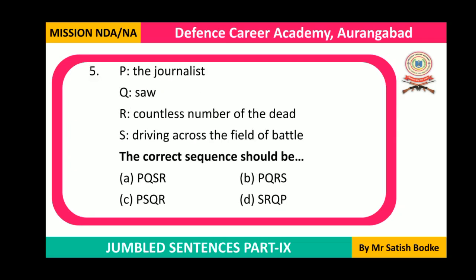Question number five: The journalist saw countless numbers of the dead. Who was driving across the field of battle? The journalist. So that participial phrase comes after the noun 'the journalist.' The full sentence reads: 'The journalist, driving across the field of battle, saw countless numbers of the dead.' The sequence is PSQR, which is option C.